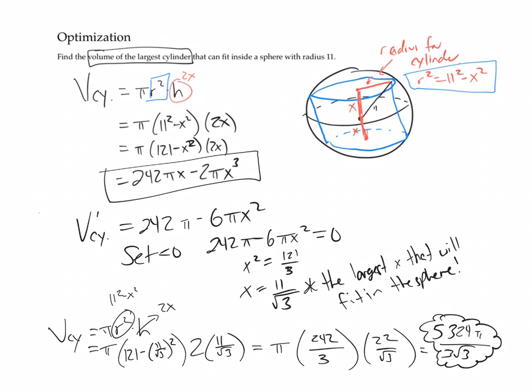Now if you really wanted to test yourself, try and figure this out in the most general form. That is, instead of having an 11, make that an R and try to find the general equation that would be the maximal volume.